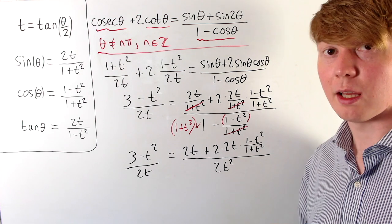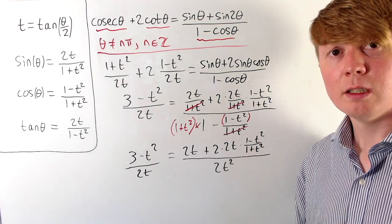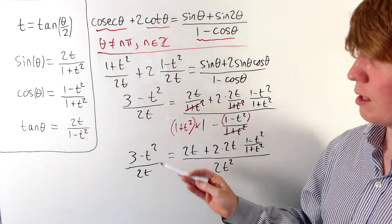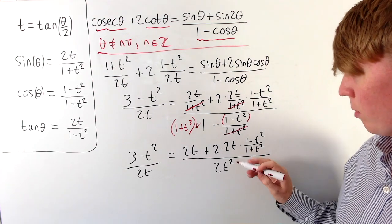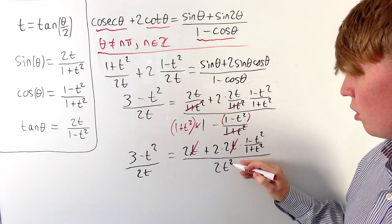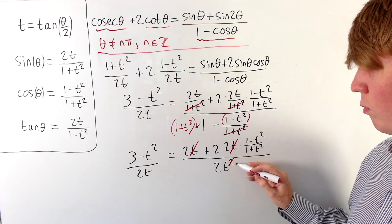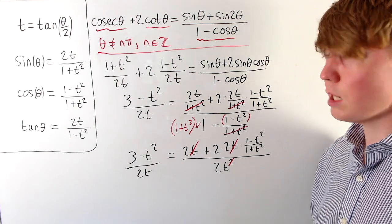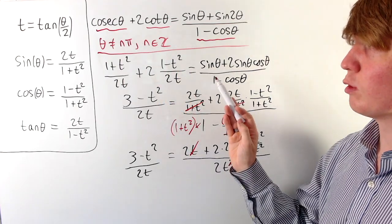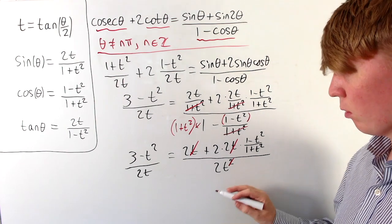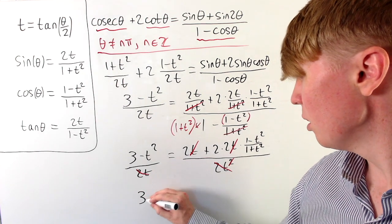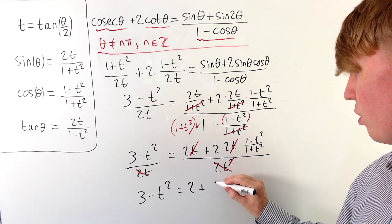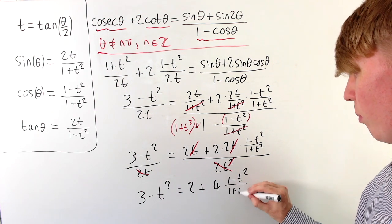We divide the top and bottom of the right-hand side fraction by t. Since we've ruled out integer multiples of π, tan(θ/2) ≠ 0, so t ≠ 0 and this division is valid. We can also cancel the 2t on both sides for the same reason. This gives the simplified equation: 3 − t² = 2 + 4(1 − t²)/(1 + t²).